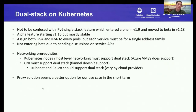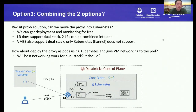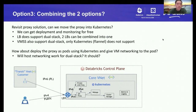After exploring all these dual-stack possibilities on Kubernetes, we went back to the proxy solution. The proxy solution looks like the right option in the short term. Then we tried to revisit our proxy solution — could we combine the two options together? Is it possible to move the proxy into Kubernetes? If we do that, we would get deployment and monitoring capabilities for free, since we know how to deploy Kubernetes workloads and have native metrics and logging in Kubernetes. On the load balancer level, it does support dual stack, so one load balancer can support both IPv4 and IPv6 traffic.